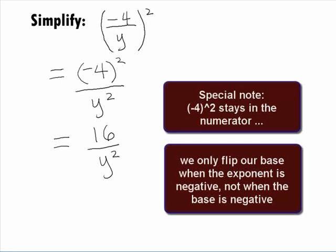Note that the negative 4 raised to the second stays in the numerator. You only flip your base when the exponent is negative, not when the base is negative.